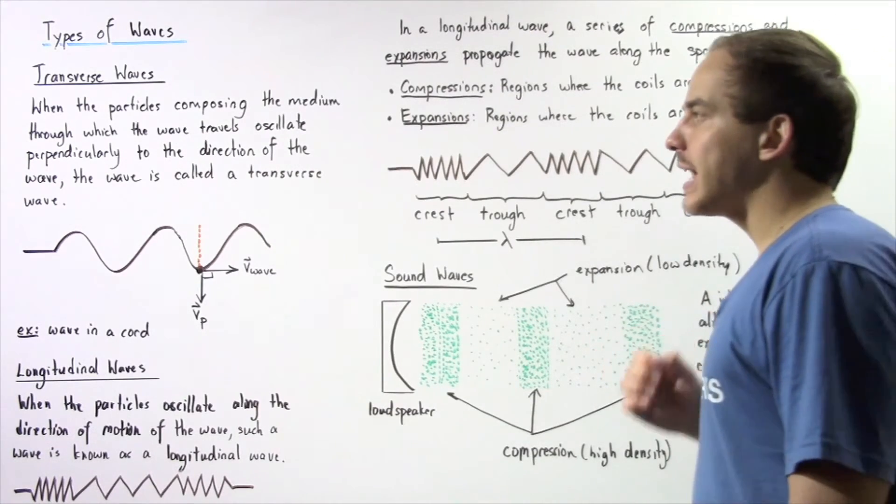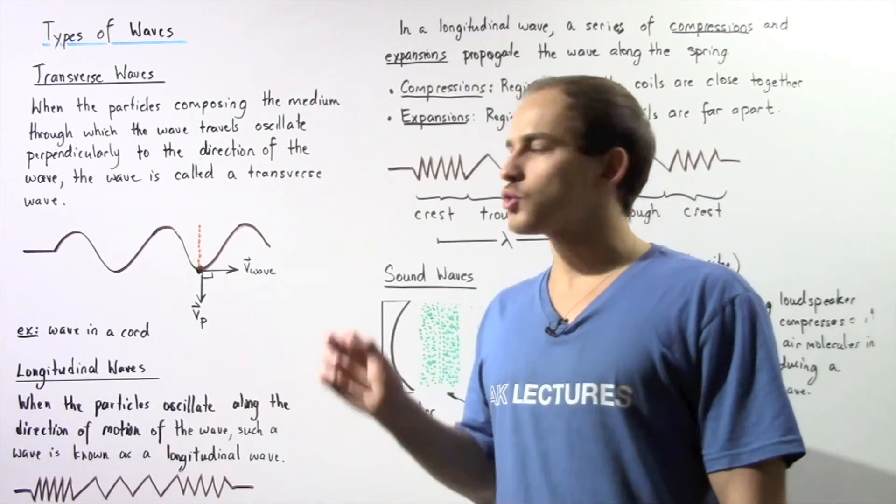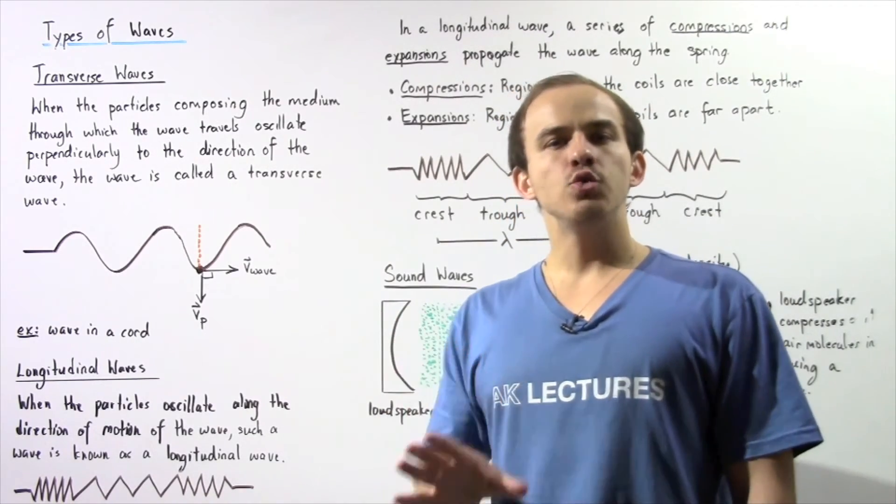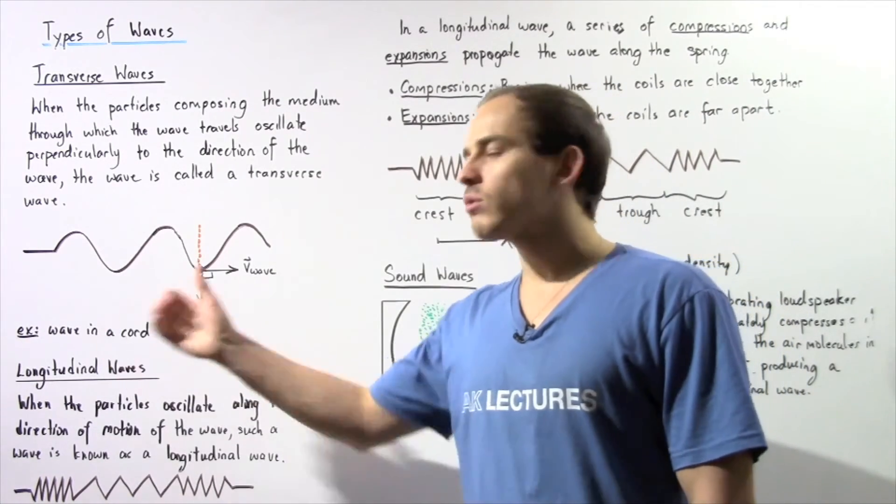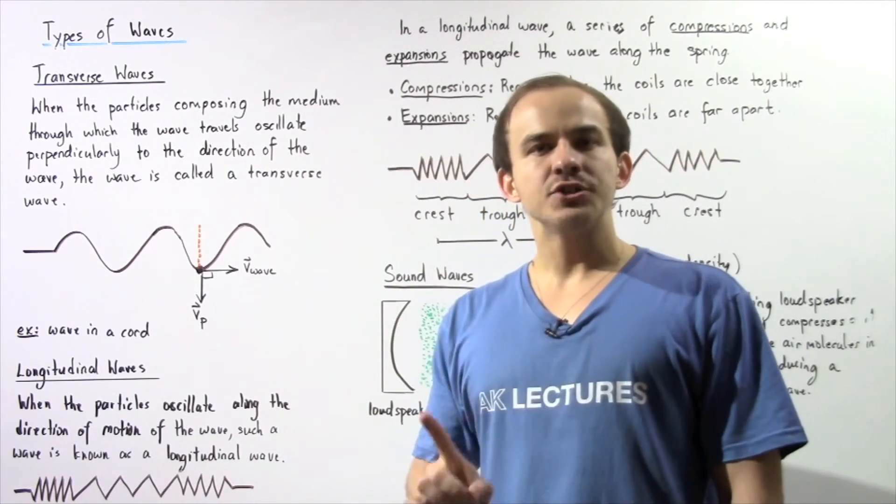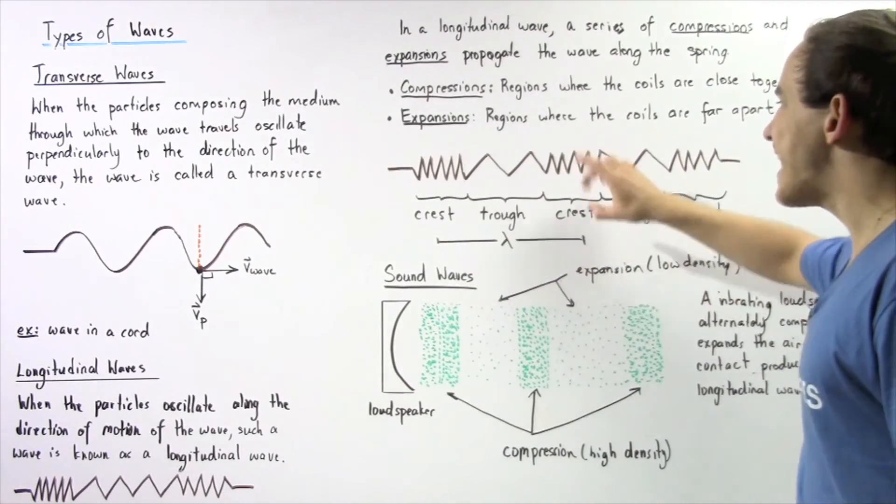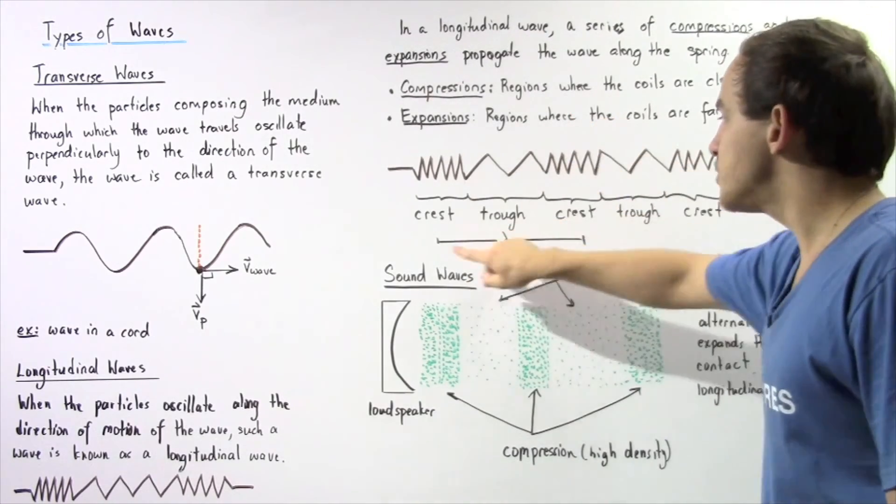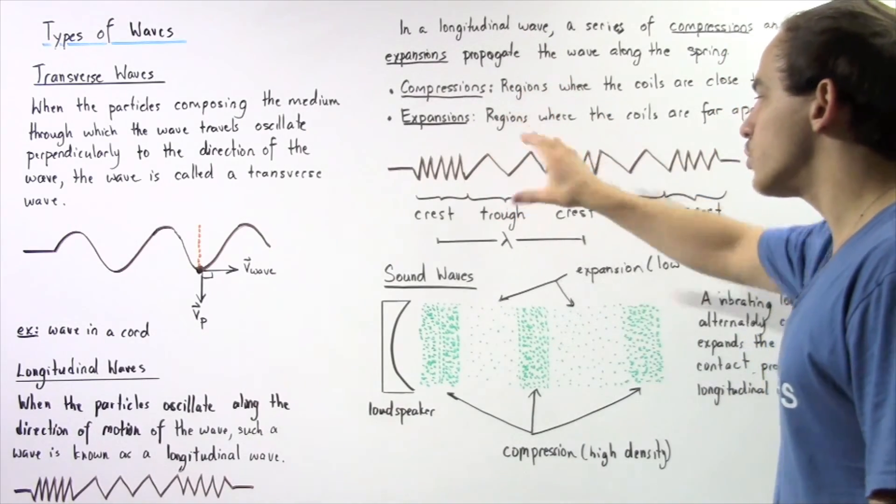Now in the same exact way that we can discuss the wavelength, the velocity, and frequency of a transverse wave, we can use those same physical quantities to describe our longitudinal waves. The wavelength in a longitudinal wave is the distance between two consecutive compressions, between the two consecutive crests of our longitudinal wave.